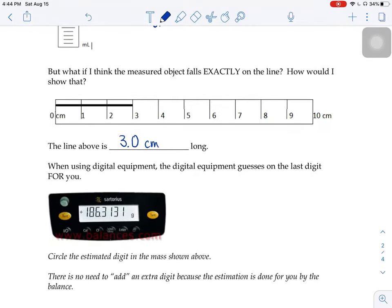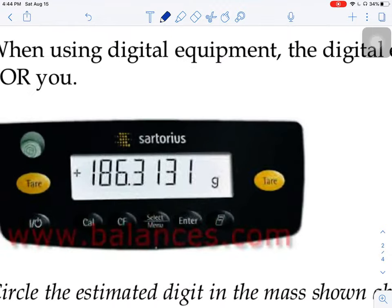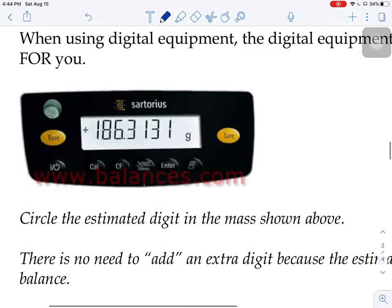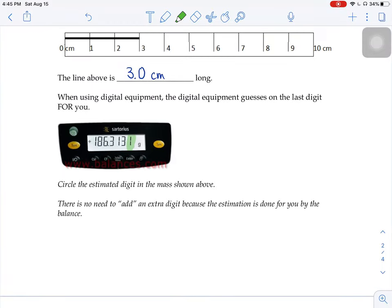When you're using digital equipment, like our electronic balances in the classroom, the digital equipment guesses on the last digit for you. So if this was your screen on the balance in the classroom, it says here, circle the estimated digit in the mass shown below. So the last digit, this guy, the balance is not sure about that one. Perhaps this mass is actually 186.3130, or maybe it's 186.3132. Just like how we take a guess on the last digit, the balance takes a guess on its last digit. So there's no need to add any extra digits because the estimation is being done for you by the balance.